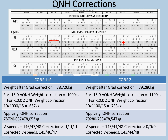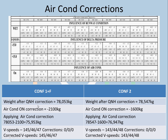Now we apply the air conditioning correction since A/C is on. Weight after QNH correction is 78,053 for config 1+F and corresponding value for config 2. Looking at the air conditioning row in the chart, the corrections are minus 2.1 tons and minus 1.6 tons respectively. Applying: 78,053 minus 2100 gives the config 1+F value, and the config 2 QNH weight minus 1600 gives that value. There is no V speed correction for air conditioning on either config, so V speeds remain as corrected for QNH.